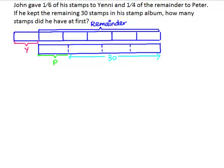First, we can see that the 30 stamps are represented by 3 units of this model. So what we will do is take 30 divided by 3, which gives us 10.